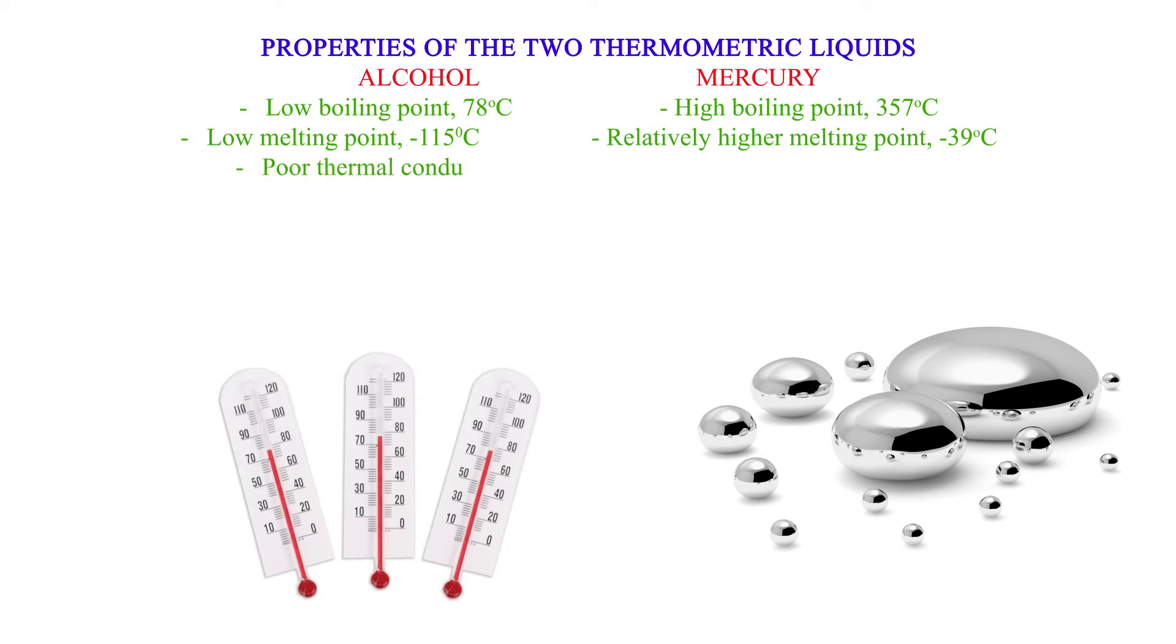Alcohol: Poor thermal conductor. Mercury: Good thermal conductor. Alcohol: Expansion slightly irregular. Mercury: Expands regularly.